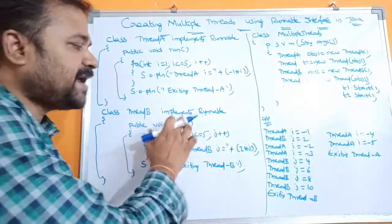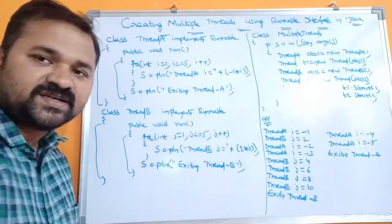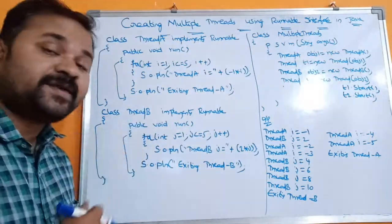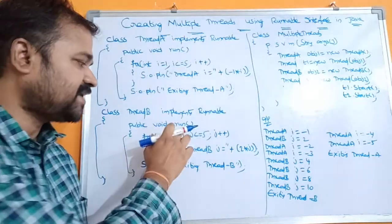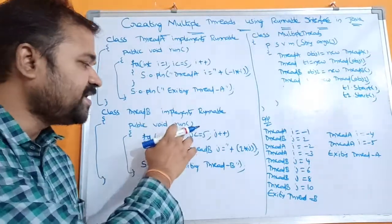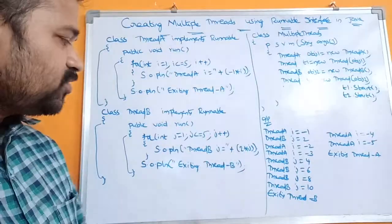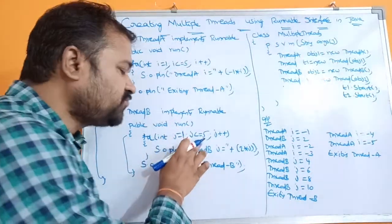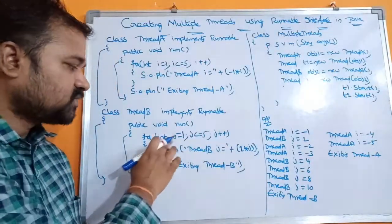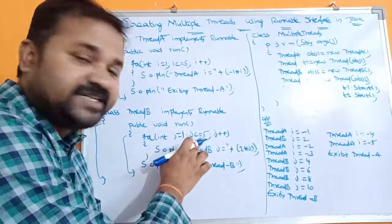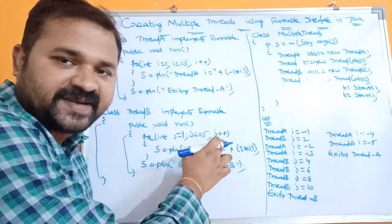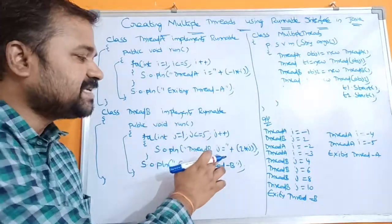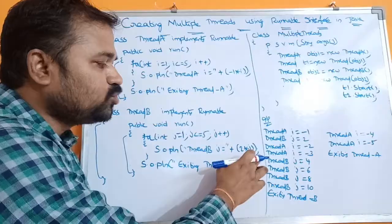Next we have created one more class, Thread B, by implementing the Runnable interface. In order to provide the definition for Thread B, here we are defining the run method: public void run. Here what we are doing is multiplying the numbers from 1 to 5 by 2: for (int j = 1; j <= 5; j++).